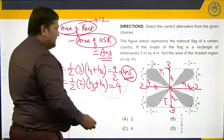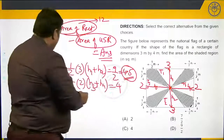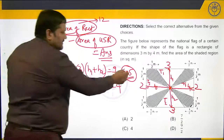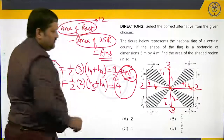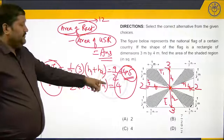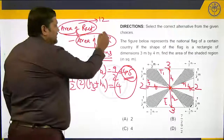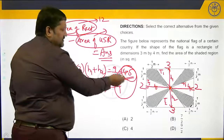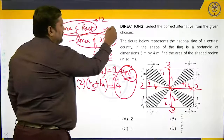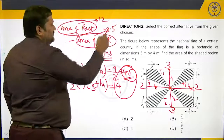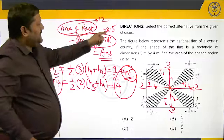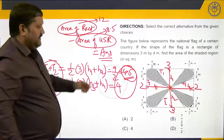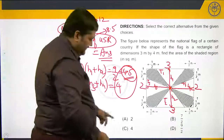The total area of all 4 triangles is 4.5 plus 4, which equals 8.5. So the area of the unshaded region is 8.5. Therefore, the area of the shaded region is 12 minus 8.5, which is 3.5. The answer is 3.5, which is option B.